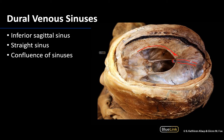Where the falx cerebri and tentorium cerebelli meet up, the straight sinus will run. Like the superior sagittal sinus, it will drain into the confluence of sinuses. You can see right around this area here quite a bit more blue — that's the confluence of sinuses forming right there. It is exactly what it sounds like: a large area where multiple venous sinuses drain. Three major sinuses drain here — the superior sagittal sinus, the straight sinus, and the smaller occipital sinus, which runs in the falx cerebelli.